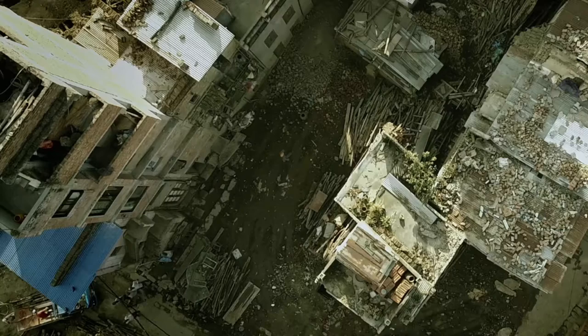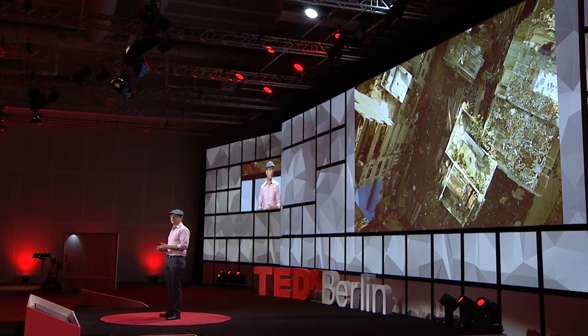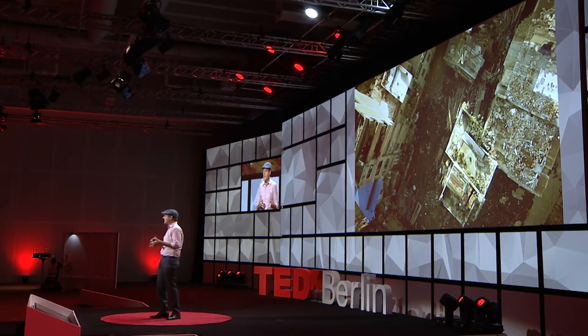And by high resolution, I really mean high resolution — you can zoom down all the way to street level. Images like these can be really helpful for assessing disaster damage, especially when you can't physically access those areas, when satellite imagery is not available, when satellite imagery is too expensive, or when you don't have a reliable internet connection to even download it.